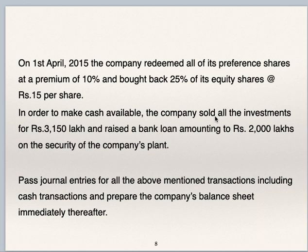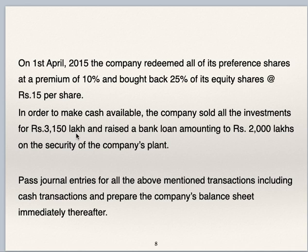In order to make cash available, the company sold all investments for Rs 3150 lakhs and raised a bank loan amounting to Rs 2000 lakhs on the security of the company's plant. All rupees are in lakhs. As per balance sheet, value of investment is 3000 and they sold investment for 3150, so there is profit on sale of investment of 150 which will be transferred to profit and loss account. They have raised bank loan of Rs 2000 lakhs. Pass journal entries of all transactions including cash transactions and prepare the company's balance sheet immediately thereafter.